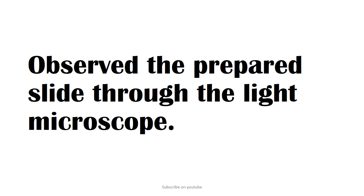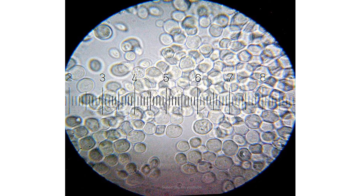Then put a drop of coconut water onto the glass slide and cover it with a cover slip. Observe the prepared slide through the light microscope under low power — get the help of your teacher. This is what you can see: the enlarged diagram of what you see under the microscope — the microorganisms in coconut water.